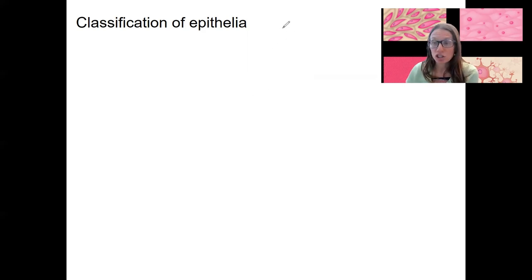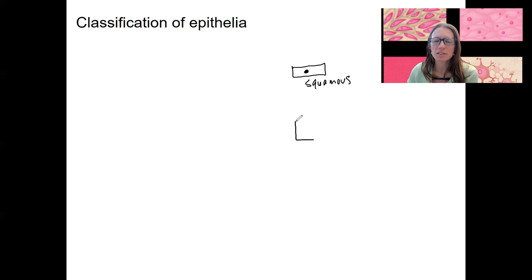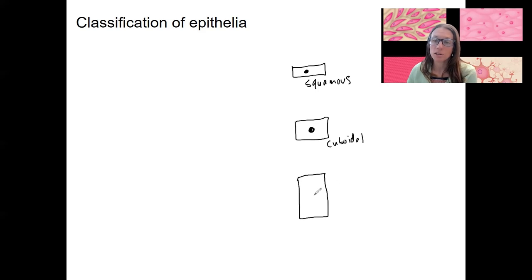There are different cell shapes we're going to see. There are very short, squat cells called squamous. There are a little bit wider cells that are more like cubes — these are cuboidal. And then there are columnar cells, which are column-like. These are the three cell shapes.